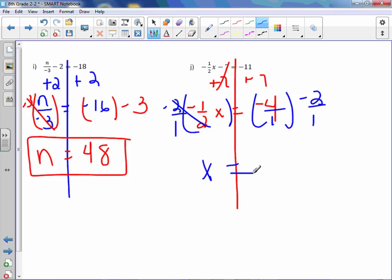Negative 4 times negative 2 is positive 8 over 1 times 1 is 1. So just X equals 8.